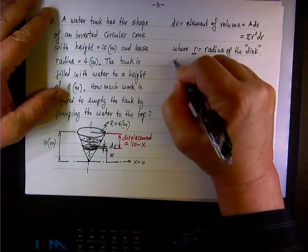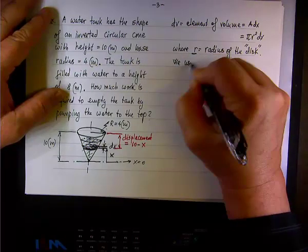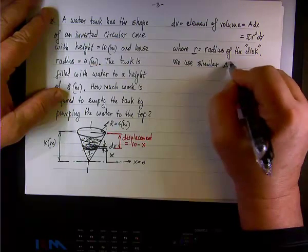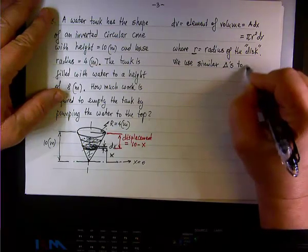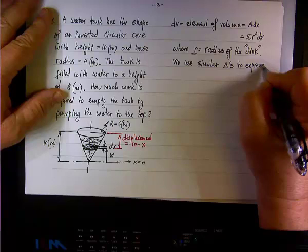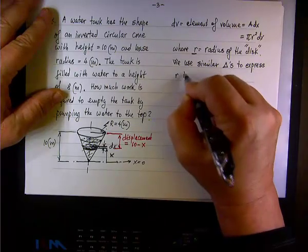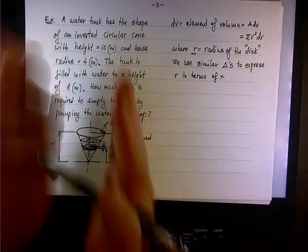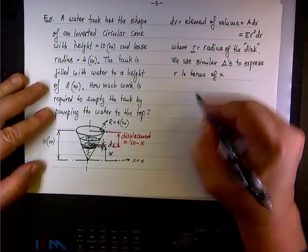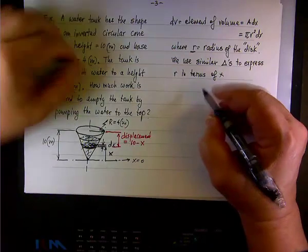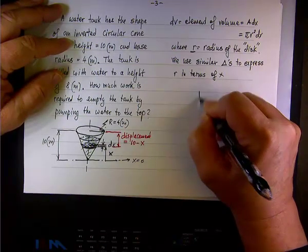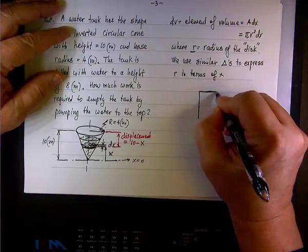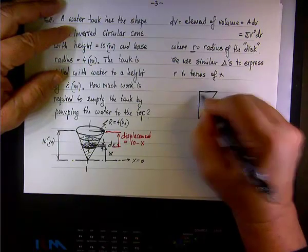So what we'll do, we use similar triangles. And we did this before, similar triangles to express r in terms of x. So I'm going to look at this cone, I'm going to take one half, in this case I'll take the right half, and what I see, if I flatten it, I'll see a triangle, a right triangle.